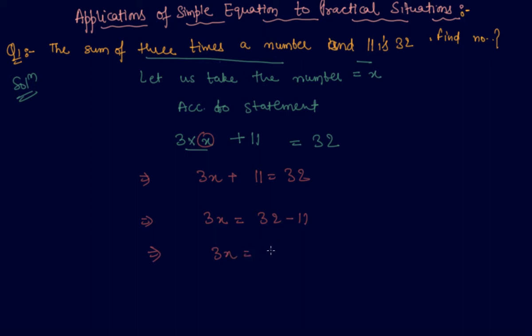32 minus 11 will be 21. So 3 is multiplying here, so on the right hand side it will be on division side, so it will be 7. So the number is, you have to write in answer, the number is 7. So this is our answer students.